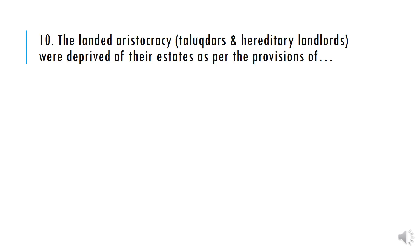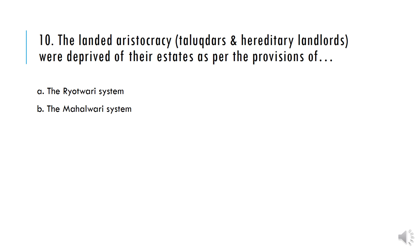The landed aristocracy, Talugdars and hereditary landlords were deprived of their estates as per the provisions of: A) The Rayyatwari System, B) The Mahalwari System, C) The Jagirdari System, D) The Inam Commission. And the answer is Option D — The Inam Commission.